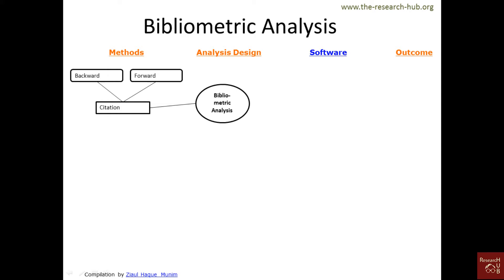Forward analysis works the other way: maybe there was a paper published in 2005, and by 2018 this paper has been cited many times. So you analyze the papers which have cited that paper published in 2005 — that is forward analysis.